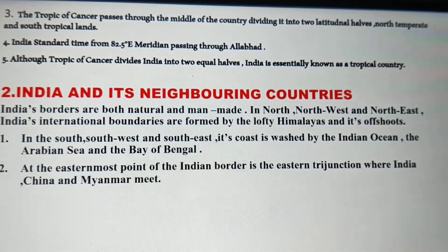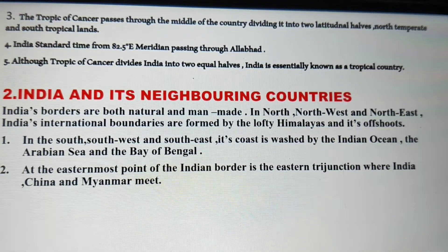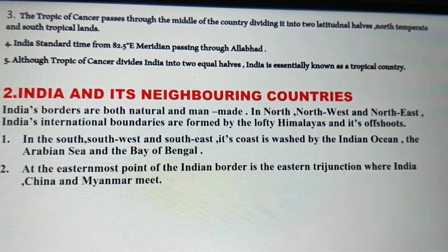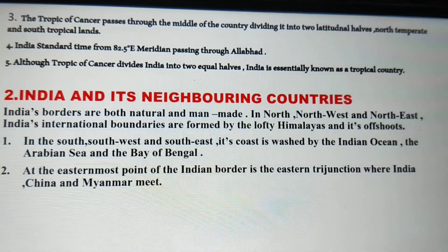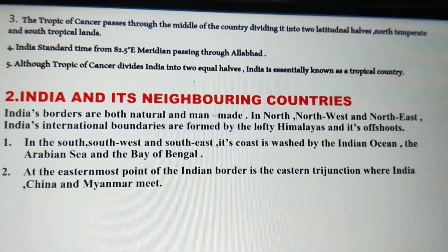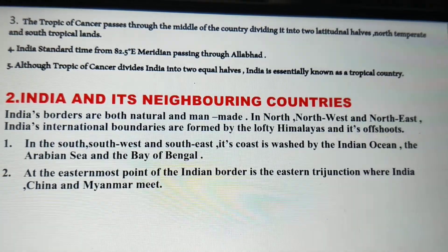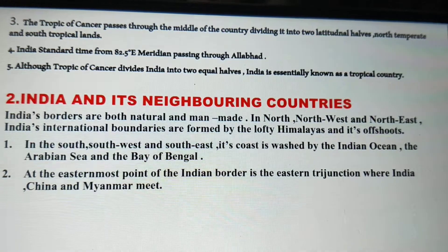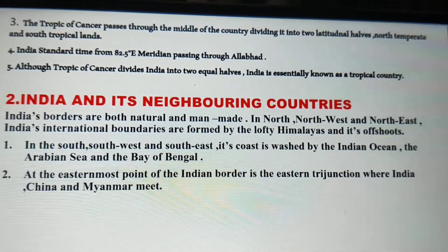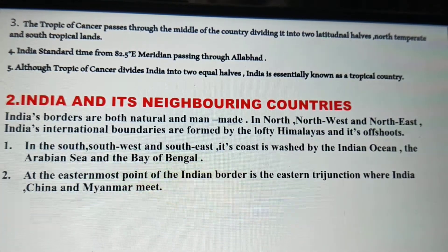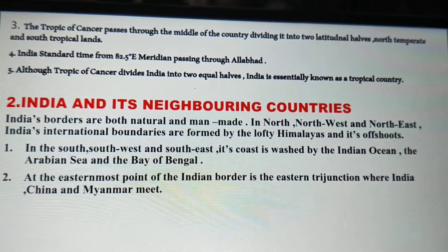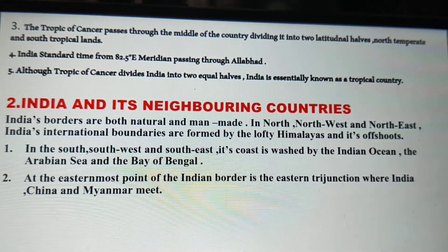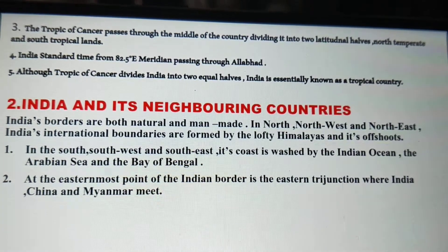The Tropic of Cancer passes through the middle of the country, dividing it into two latitudinal halves: north temperate and south tropical lands. India has been divided into two equal latitudinal halves — the northern part is known as north temperate and the southern part is known as south tropical lands.